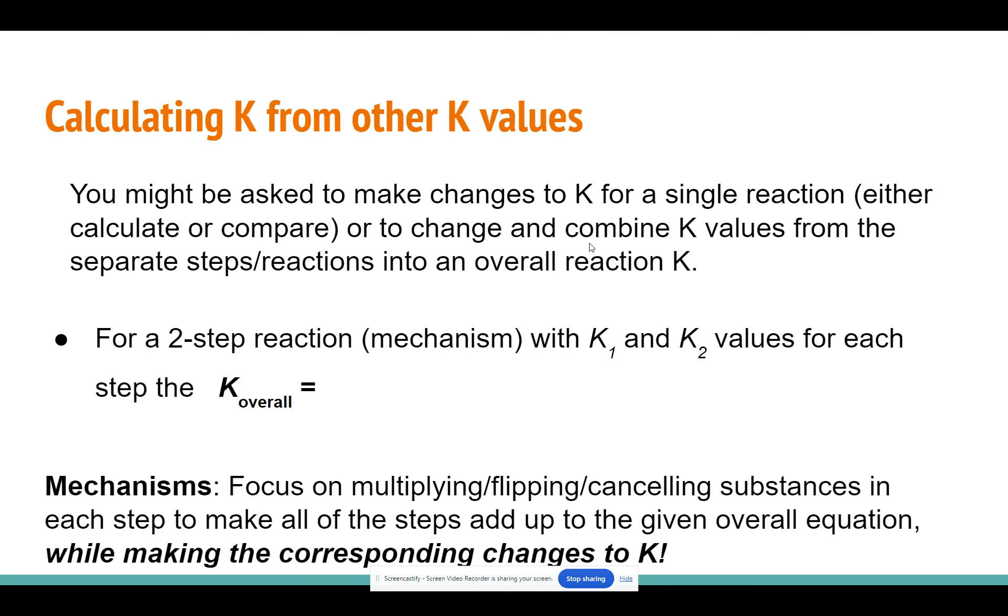Now, in a mechanism, if we have two steps, two different partial reactions that are going to add up to our overall reaction that have the K values K1 and K2, when we add those two steps up to get our overall reaction, then we're going to be multiplying their K values together. So in general, for mechanisms, and we have two examples at the bottom of this page that have mechanisms that we're going to try and combine into an overall, you're going to have to change each of the reactions to make it match our overall reaction.